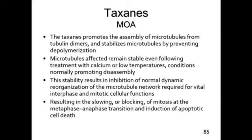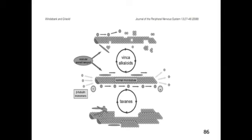Visually, normal microtubules have tubulin monomers constantly being added on one end and removed on the other. Taxanes bind to the tubulin dimers, making them non-functional. This interferes with axonal transport leading to length-dependent chemotherapy-induced neuropathy, which is one of the major side effects. As for resistance: multidrug transporters play a role, as does structural alteration of alpha and beta tubulins and upregulation of taxane-metabolizing enzymes.